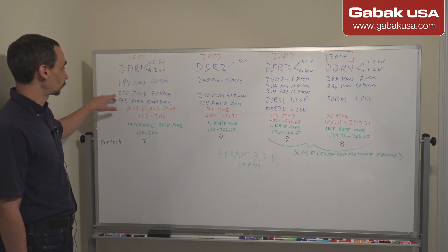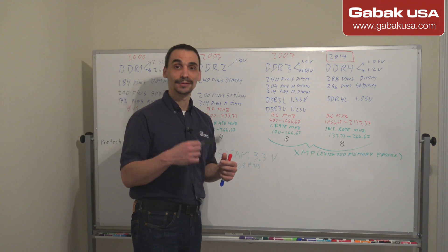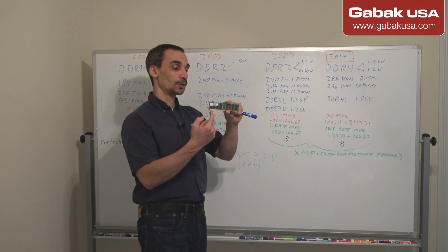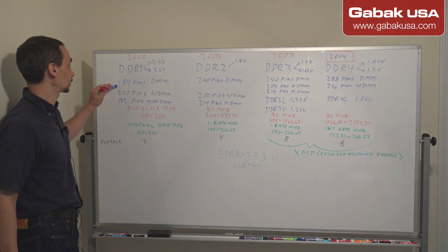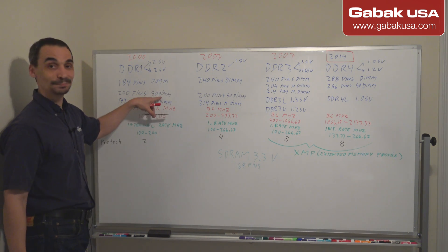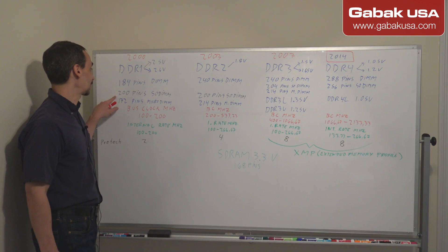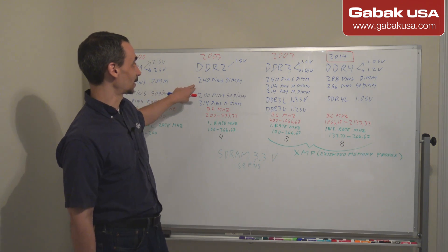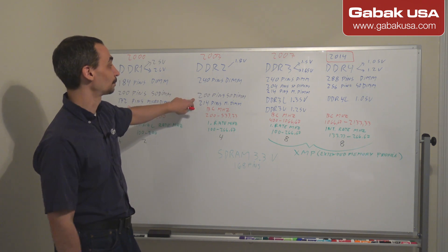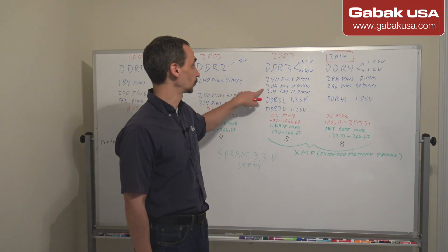Now let's think about the sizes and pin counts. DDR1 for desktop computers has 184 pins, and the SO-DIMM form factor has 200 pins. DDR2 has 240 pins for desktop and 200 pins for notebooks. DDR3 has 240 pins for desktop and 204 pins for the SO-DIMM.